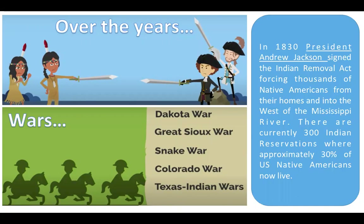You can see here that during the time from Christopher Columbus arriving in 1492 there were five wars. In 1830 President Andrew Jackson signed the Indian Removal Act, forcing thousands of Native Americans from their homes and into the west of the Mississippi River. There are currently 300 Indian reservations where approximately 30% of US Native Americans now live.